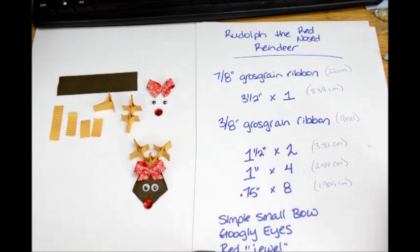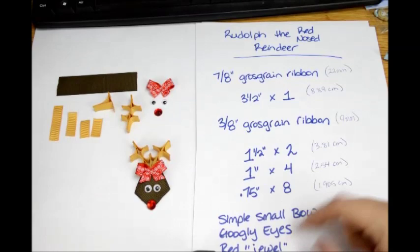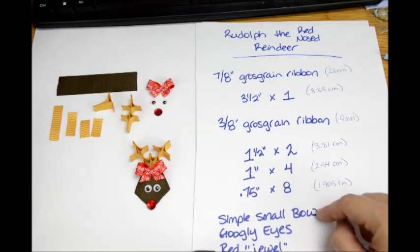You'll need a simple small bow, which I have a tutorial for. You'll need a pair of googly eyes and a red jewel for the nose. You can also see the written instructions for the simple small bow on my blog at lacybowsboutique.com.